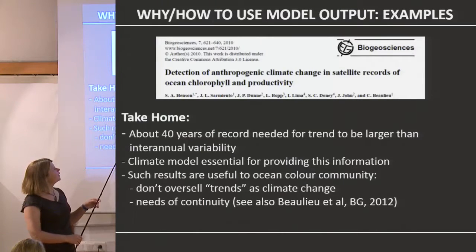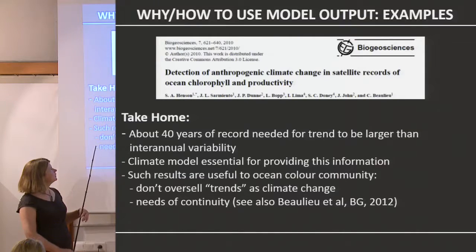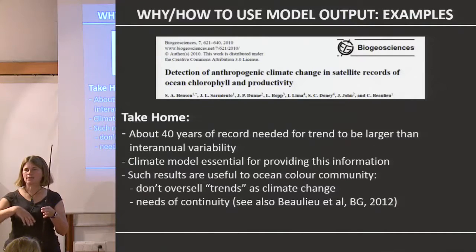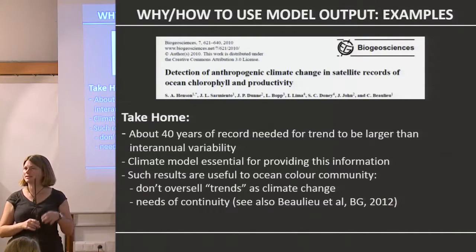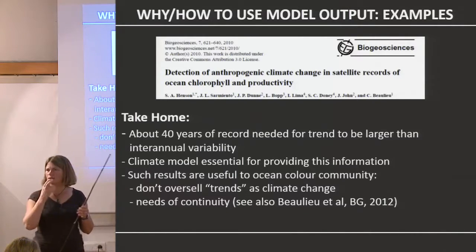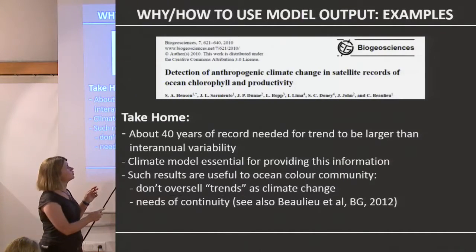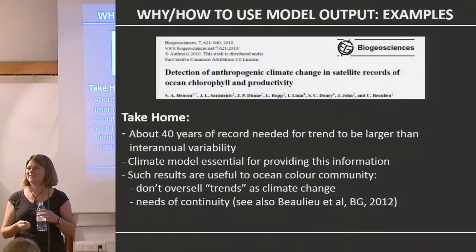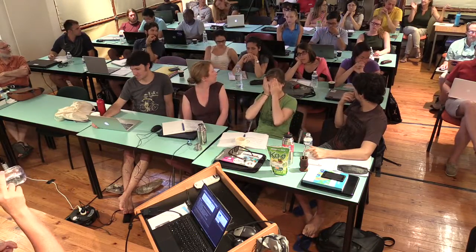Climate models are going to be really important because it's going to take a long time to see the signal. Another paper by Claudie Beaulieu with Stephanie Henson looked at what happens if you stop the measurements — if there wasn't an ocean colour satellite for a little while, it sets you back and you'd need something like 70 years. That can be useful to the ocean colour community and to people making decisions about whether to put another satellite up. There are a lot of sensors in space that require calibration to MODIS, and MODIS is not going to last forever — so we need to be nervous about continuity.